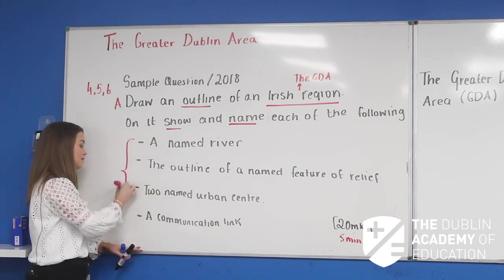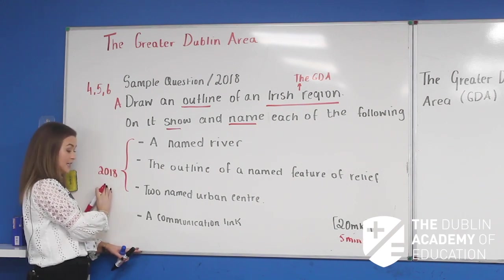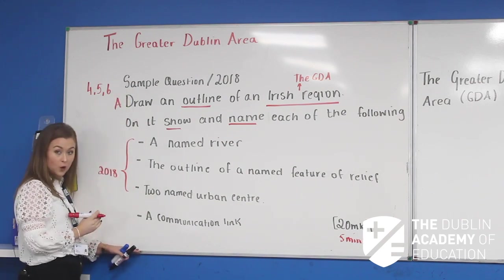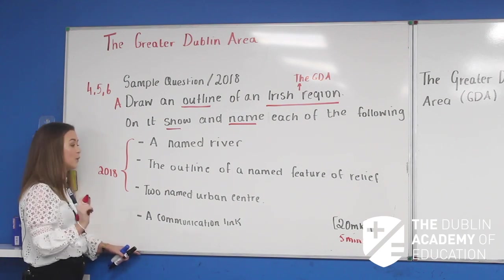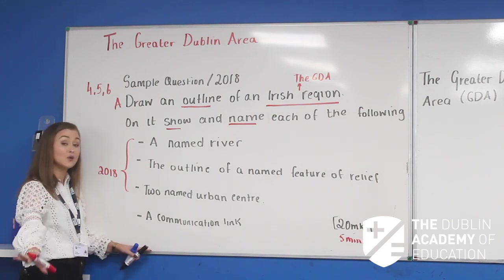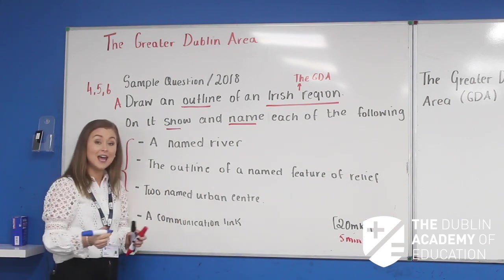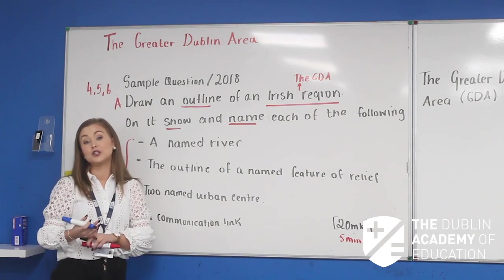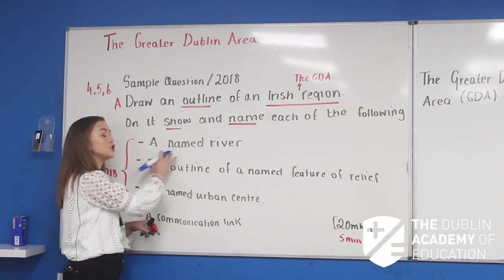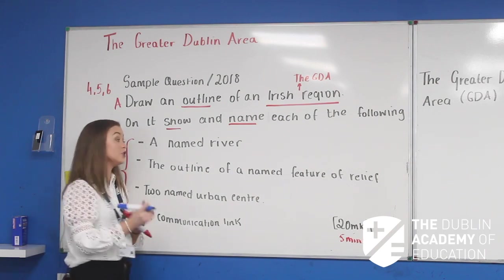This is the 2018 question. Down here is an additional point I've put in from the sample question — a little bit extra that I do think will come up. It's come up in your European and subcontinental questions. What they ask us to show and name is first of all a named river. A named river can also be referred to as a feature of drainage, so highlight and jot that in. The feature of drainage we're going to look at is the River Liffey.